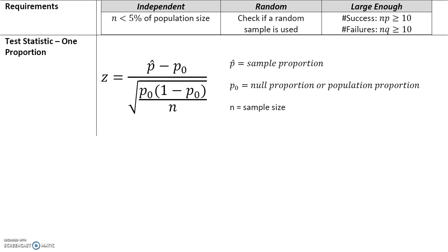Here's an introduction to the test statistic. The test statistic z is equal to p-hat minus p-naught, divided by the square root of p-naught times (1 minus p-naught) divided by n. Here, p-hat is the sample proportion and p-naught is the null or population proportion. The denominator is the standard deviation of sample proportions — we've seen this before.